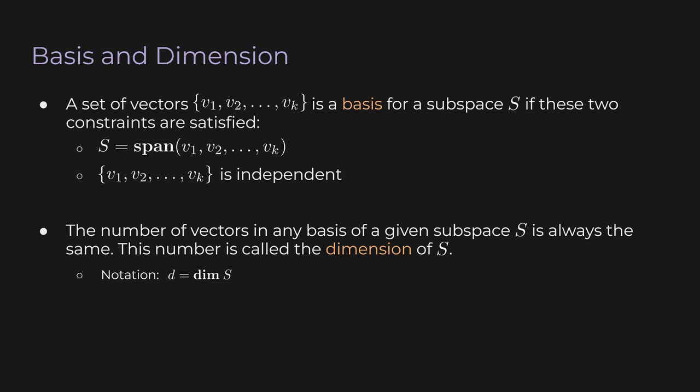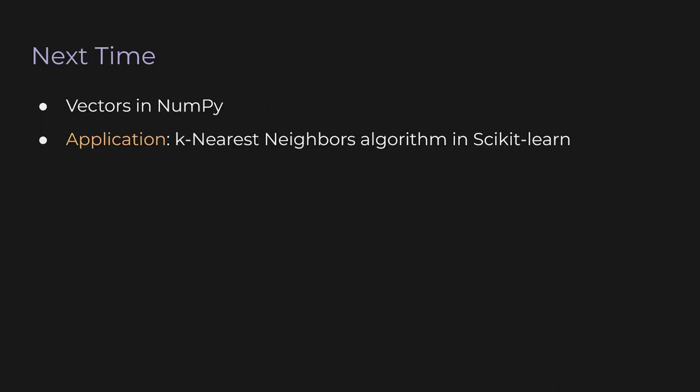This number — the number of vectors in any basis — is the dimension of S, written as dim S. For ℝ² the dimension is 2, for ℝ³ it's 3. Going back to the idea of subspaces embedded in higher dimensions: you could have a two-dimensional subspace in a five-dimensional space. So in ℝ⁵, if you just have two vectors forming a 2D plane, that plane is a subspace with dimension 2. We covered a lot of definitions and concepts in this lecture, but we've built a strong toolkit for future lectures. Next time, we'll look at Python programming and explore these vector concepts in NumPy, and also look at the k-nearest neighbors algorithm in scikit-learn.